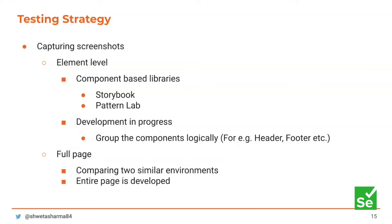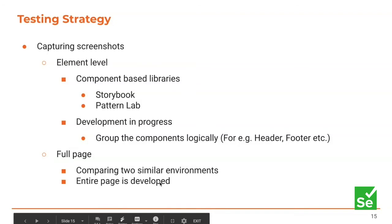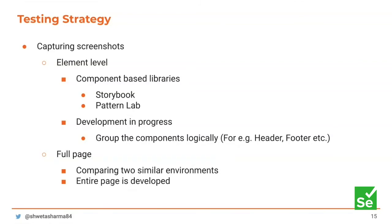Element level strategy is good if you are using component-based libraries like Storybook or Pattern Lab. For full page, use it when comparing similar environments — for example, comparing a staging site that is a replica of production after pushing recent changes, to ensure the UI looks correct before going live. Once an entire page is developed, go ahead and change your automated visual tests to capture the entire page.